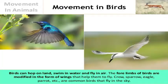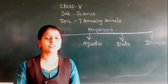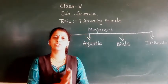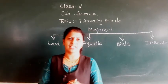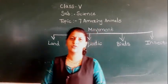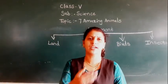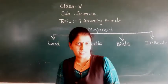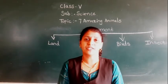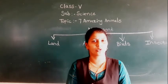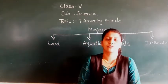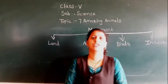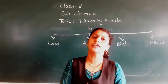The next category is birds. Birds use their wings to move from one place to another. They have two legs which they use to hold a branch or to walk short distances. There are some birds such as emu, ostrich, and penguin which are classified as birds but do not fly, because of their heavy body and weak wings.